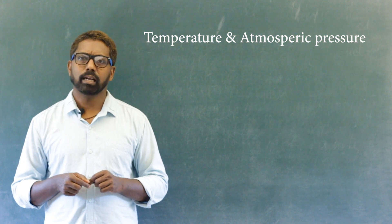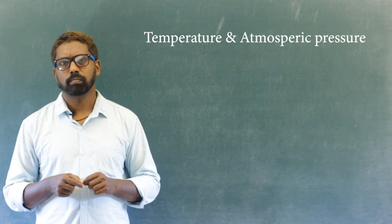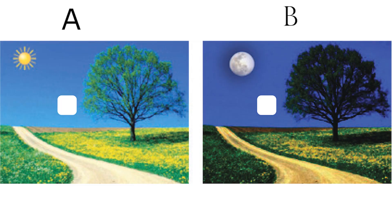Observe the pictures. Here are two pictures. Identify the situations of low and high atmospheric pressure and suitably mark H for high pressure and L for low pressure in the pictures.